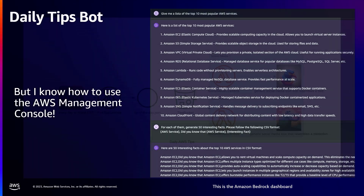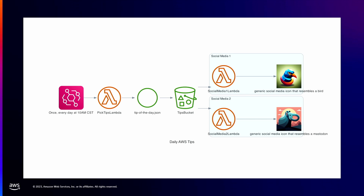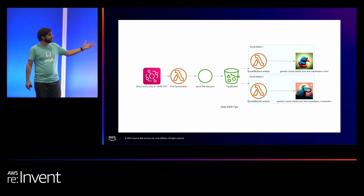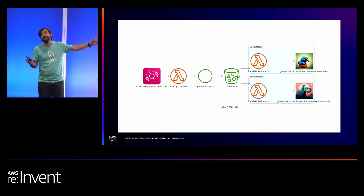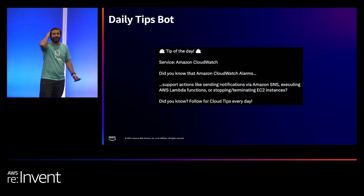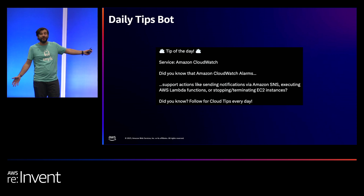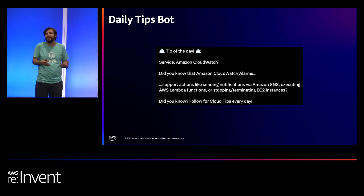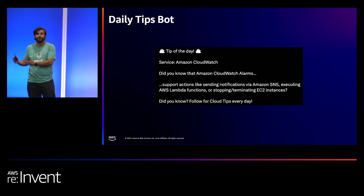I got that file, added it to a bucket, and set up a rule that every day at 10 a.m. Central it would trigger a Lambda function. That Lambda function picks one fact randomly, writes it as a JSON into a bucket. Whenever that file is put, two more Lambdas are triggered to publish that information to two different social media platforms. And that's it. Now every day I receive a message from the bot telling me about a service — what it is and an interesting fact about it. And there are already followers benefiting from this bot as well.